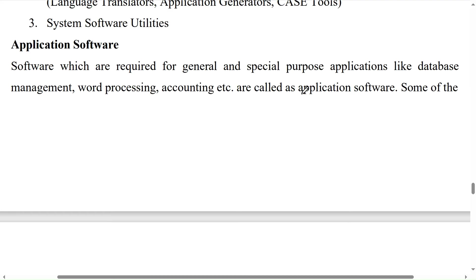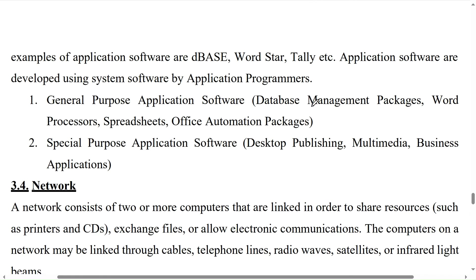Application software refers to software required for general and special purpose applications like database management, word processing, and accounting. Examples of application software are dBase, WordStar, and Tally. Application software is developed using system software by application programmers. There are two categories: general purpose application software — like data management packages, word processing, spreadsheets, and office automation packages — and special purpose application software, such as desktop publishing, multimedia, and business applications developed for a specific purpose.